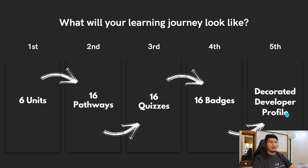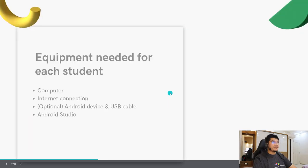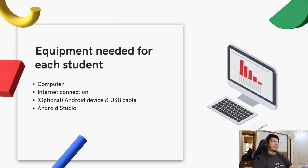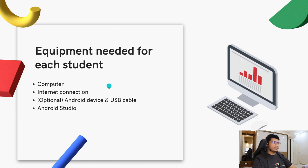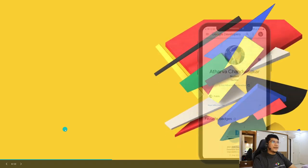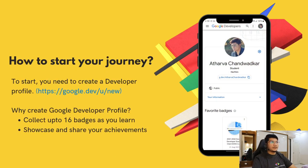There are a few things we expect you to have while attending the sessions. You need a computer or laptop, a stable internet connection, and Android Studio installed on your system. An Android device and USB cable are optional. However, if your device has only 2 GB or 4 GB of RAM, it may not handle emulators in Android Studio well, so carrying an Android device and USB cable is recommended.